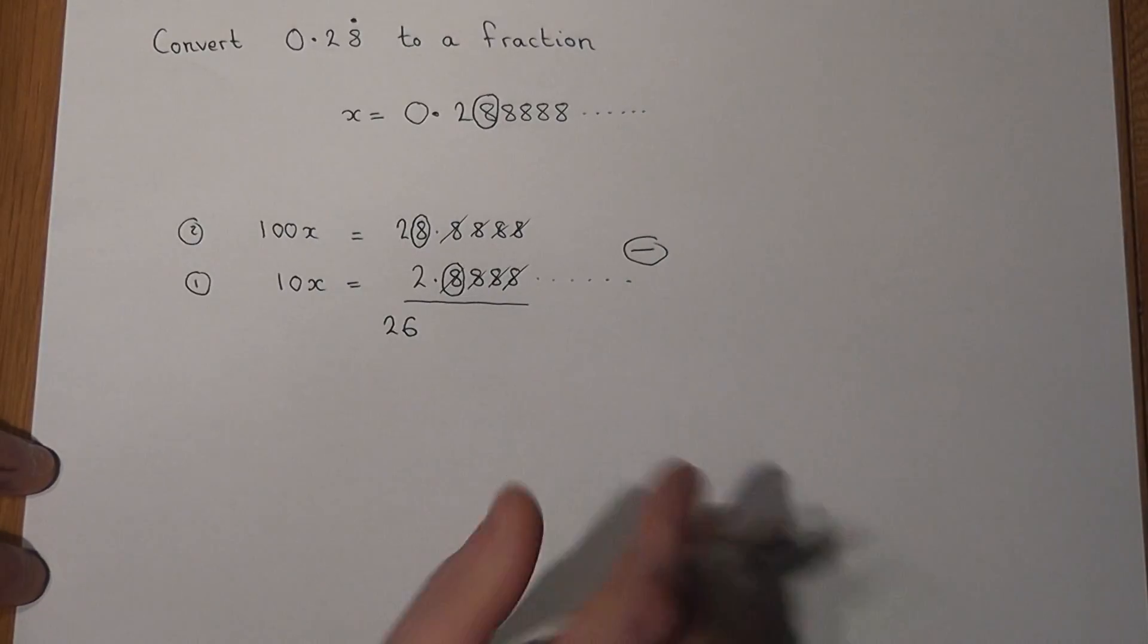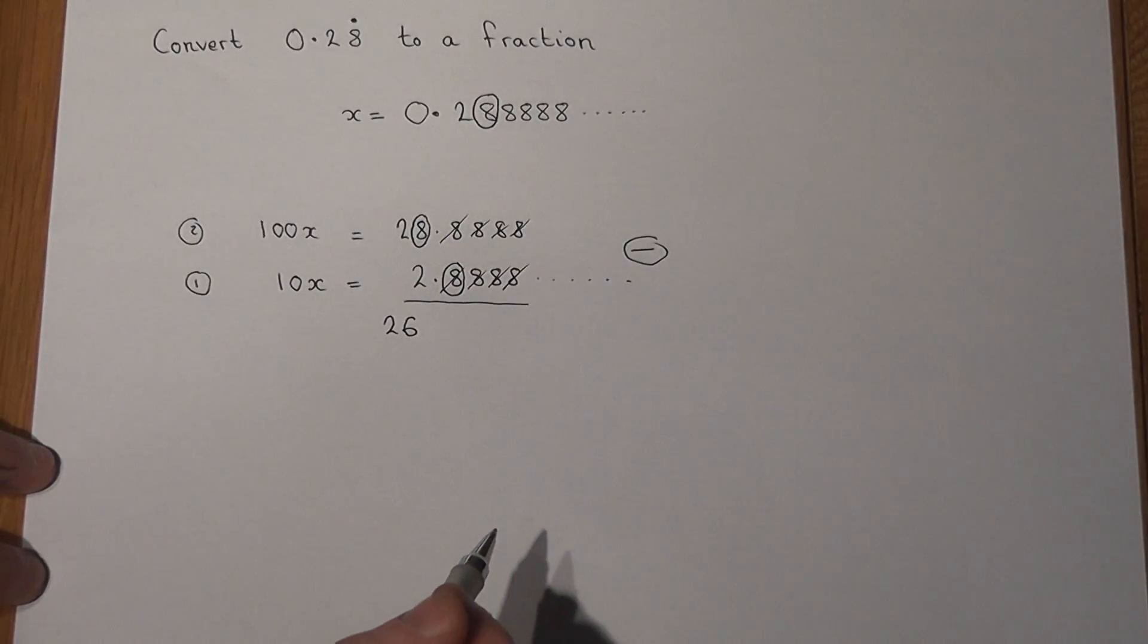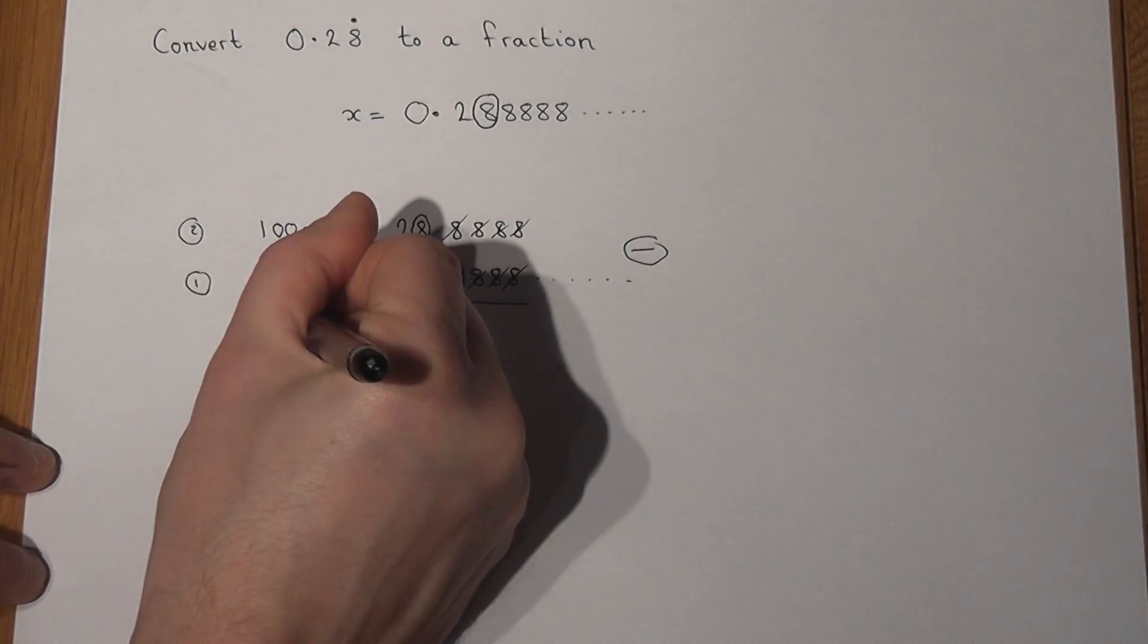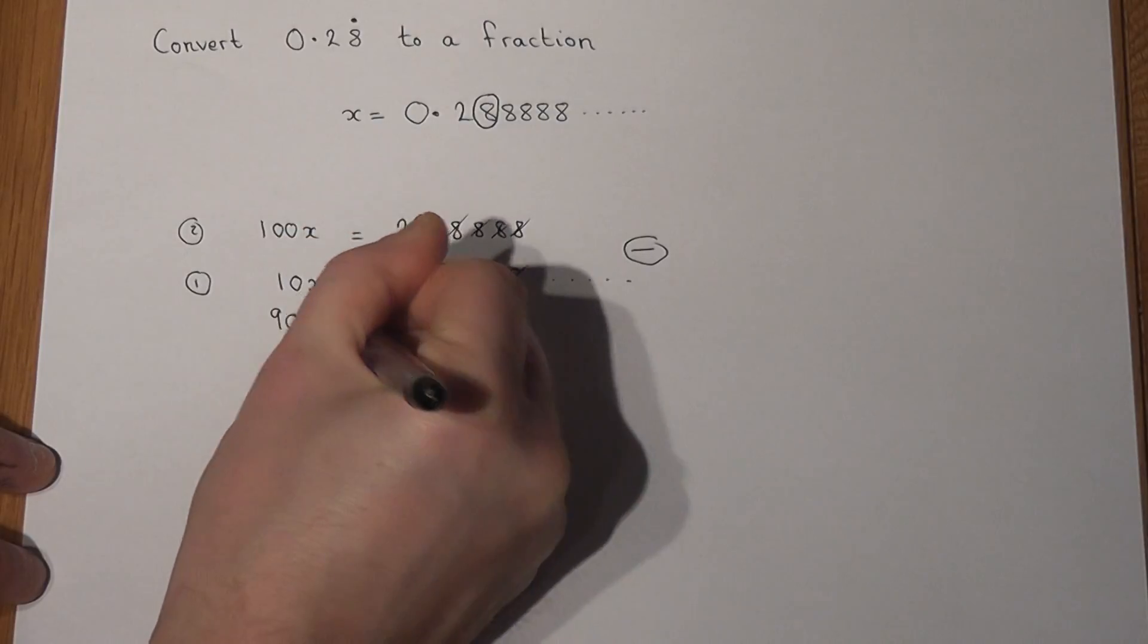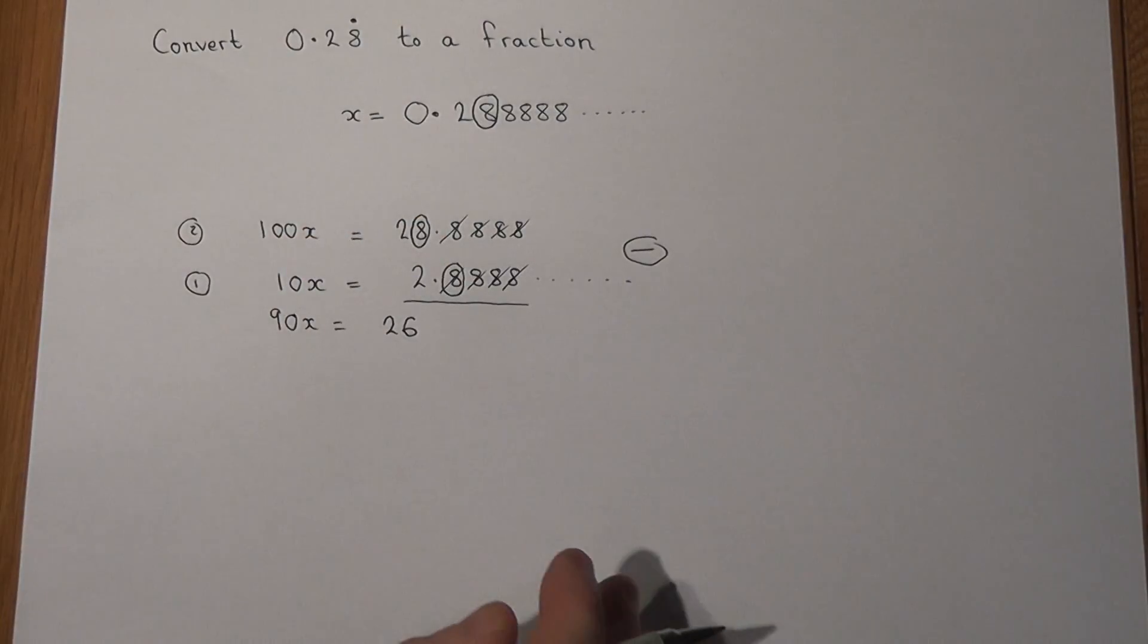And all I'm left with is 100X take away 10X, which is just 90X. So 90X just equals 26.